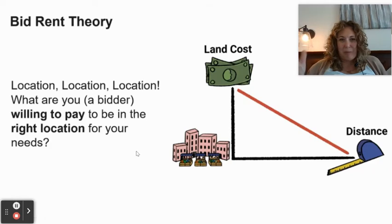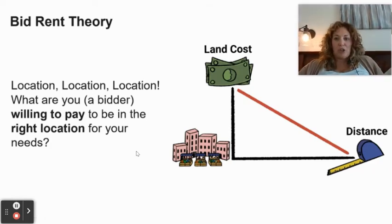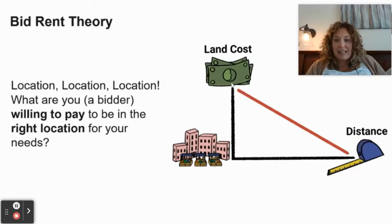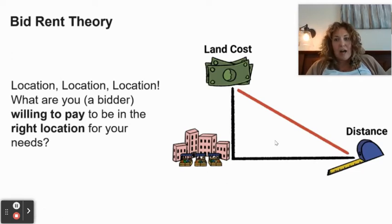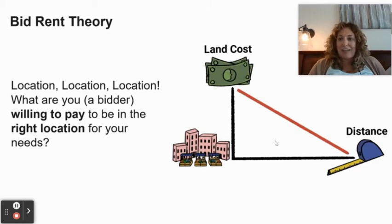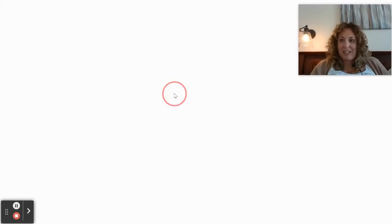Bid-rent theory: location, location, location — what are you willing to pay to be in the right location for your needs? Here is the business, here's the market, the people who will buy the product. How much will the land cost versus how far away from that market is it? Remember the von Thünen model — that first ring of dairy and market gardening is expensive because it's close to the central business district.